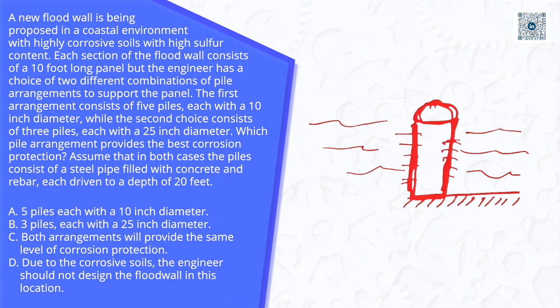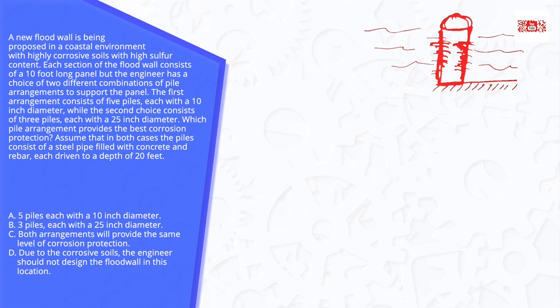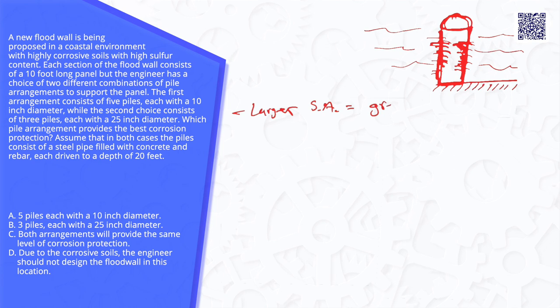So what's eventually going to happen is that this column will wither away. So the longer it takes to eat away at the sides, the greater corrosion protection will be provided. So let's write that down to keep us on track. Larger surface area equals greater protection.